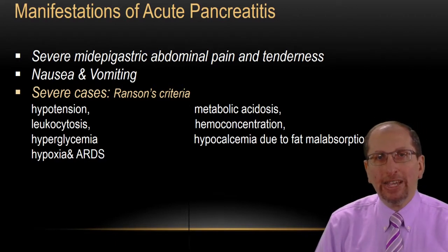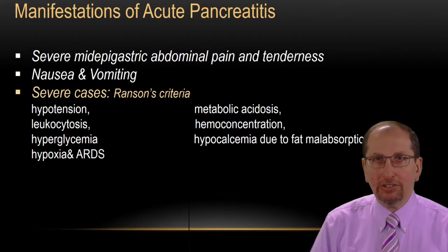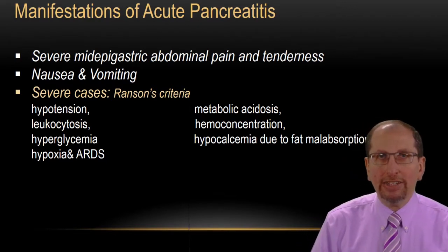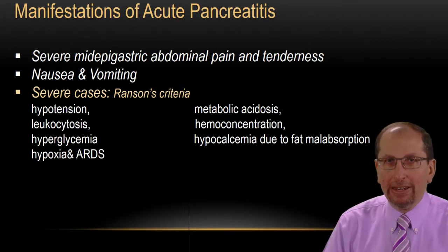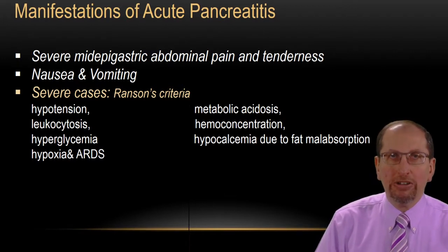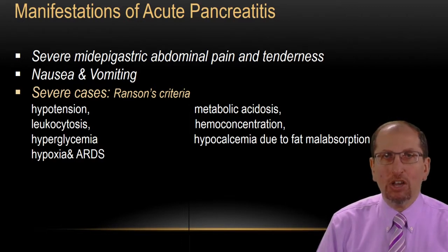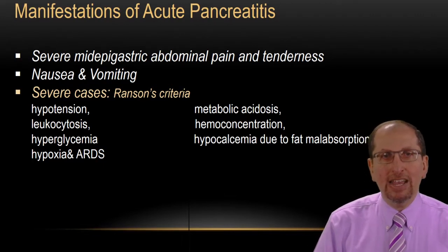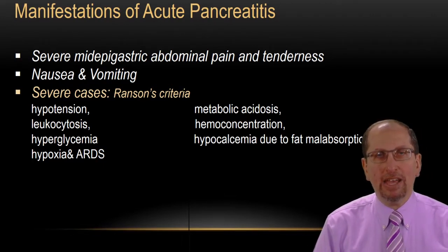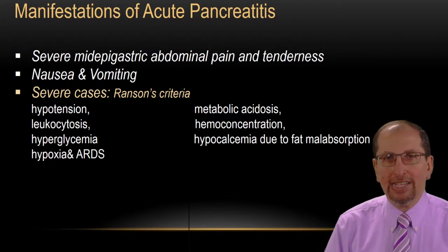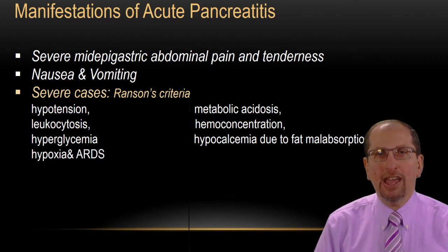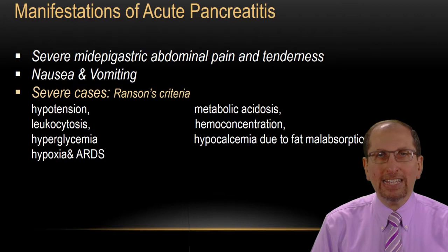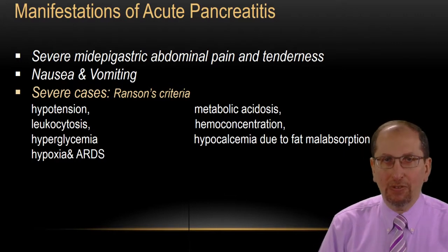In severe cases, we can find Ransom's criteria. What are Ransom's criteria? These are not criteria to diagnose acute pancreatitis. These criteria tell you that the acute pancreatitis is severe enough to warrant surgical exploration. The components include: hypotension, leukocytosis, hyperglycemia, hypoxia, ARDS, metabolic acidosis, hemoconcentration, and hypocalcemia due to fat malabsorption. When you find these criteria, they indicate the severity of acute pancreatitis.